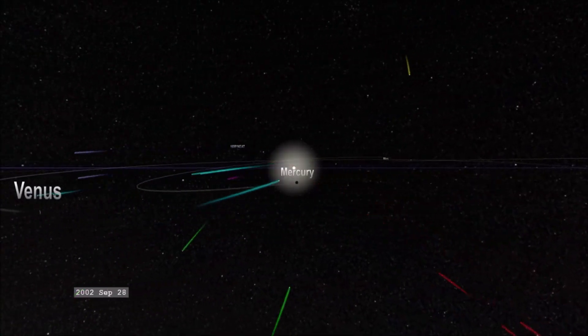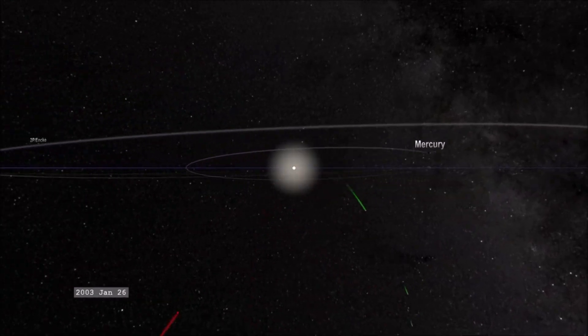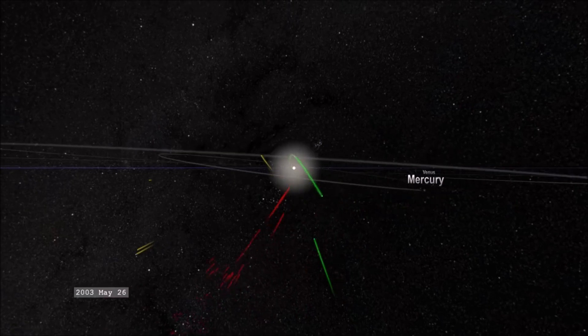The orbit of a comet is usually elliptical, or oval in shape, and may have a length of only a few years or as many as millions of years. Comets may be classified by the length of their orbits.